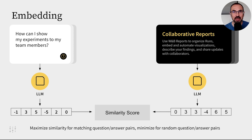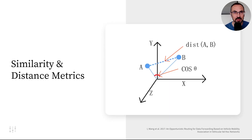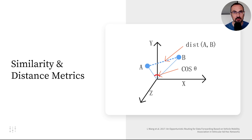How do we calculate similarity using our embedding model? We can use Euclidean distance, which is the length of a line between two points in the vector space. Or we can use cosine similarity, which is the angle between two vectors. Both of these metrics are popular and demonstrate similar performance, but experimenting with them could help find the best one for your specific dataset.